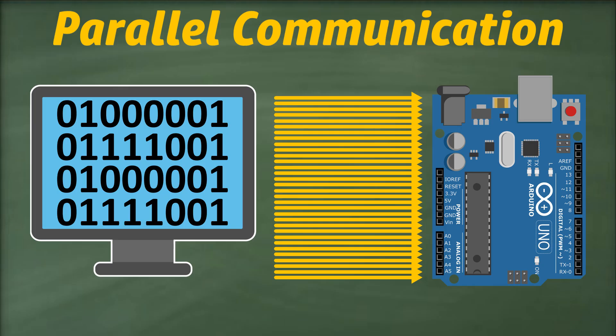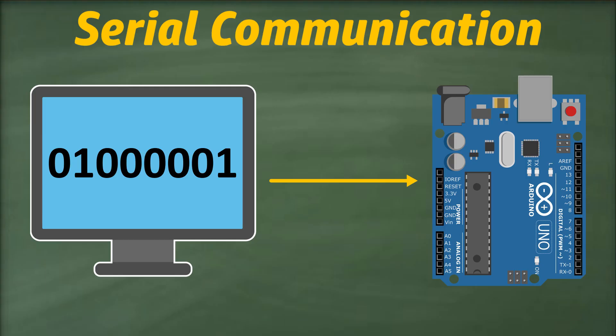Another method of transmitting data from our PC to Arduino is called serial communication. In this method, instead of transmitting all bits simultaneously, they're arranged in series and conveyed one by one through a single cable. This approach reduces the number of required connections, but it is slower than parallel communication.